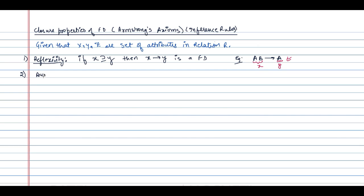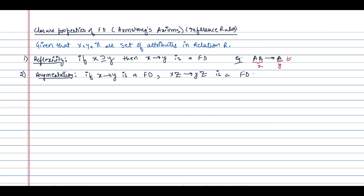The second closure property is called augmentation. If X determines Y is a functional dependency, then XZ determines YZ also holds as a functional dependency. Here, attribute Z is added on both sides, and Z can also be a set of attributes.